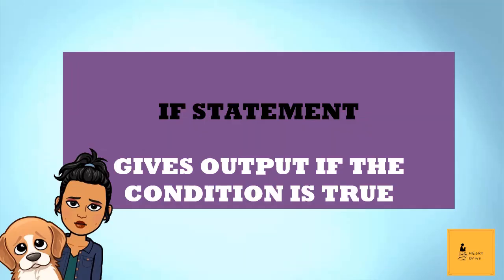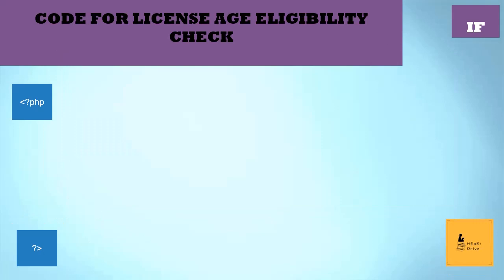Let's see what the if statement is. To check whether a person is eligible to get a license or not, the age value of the person should be more than 18. So, to get output on this, the person's age should be compared with 18 and then the result should be produced. Let's try to write code for this.